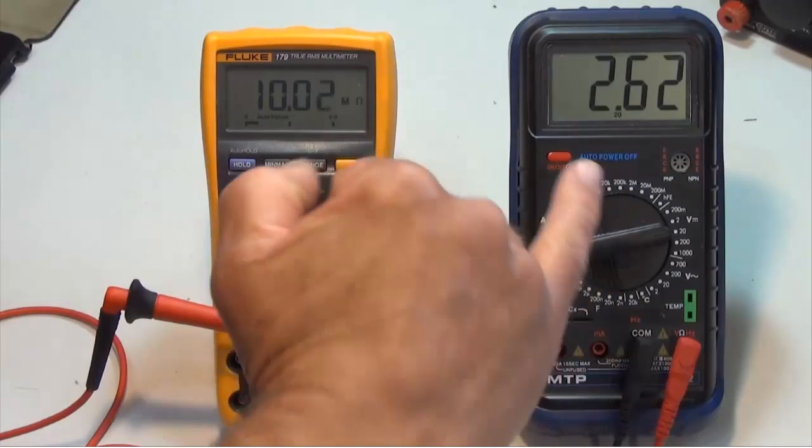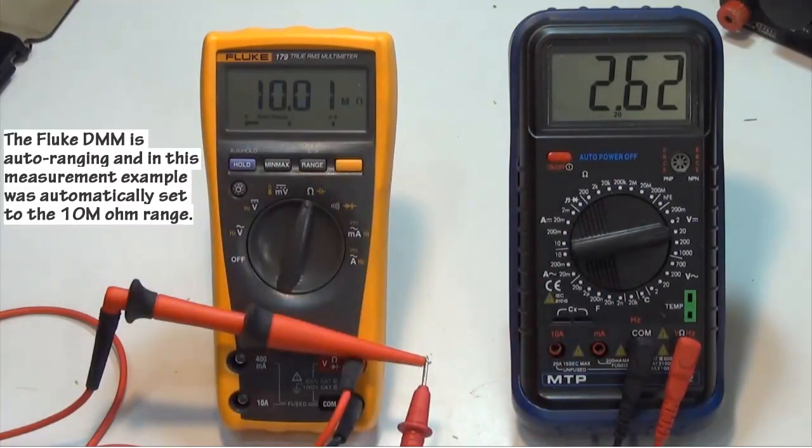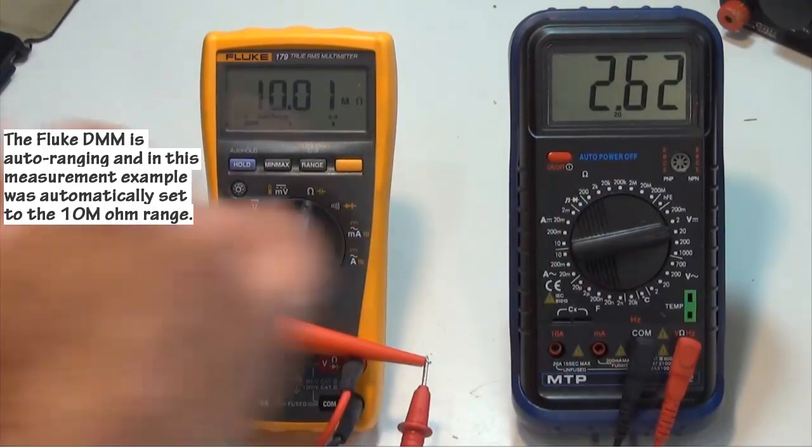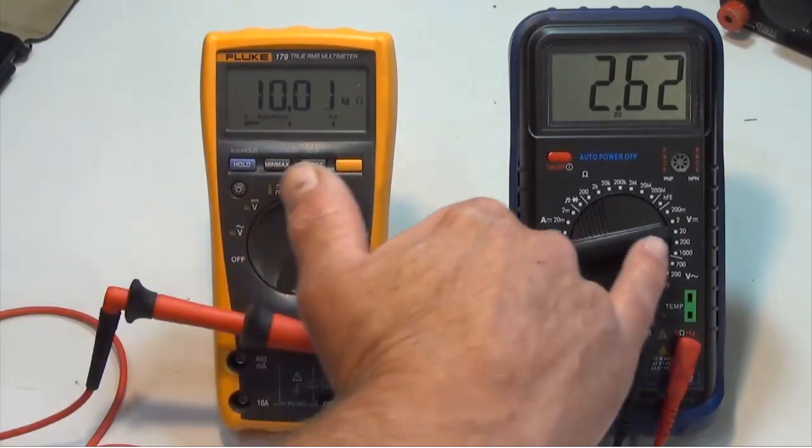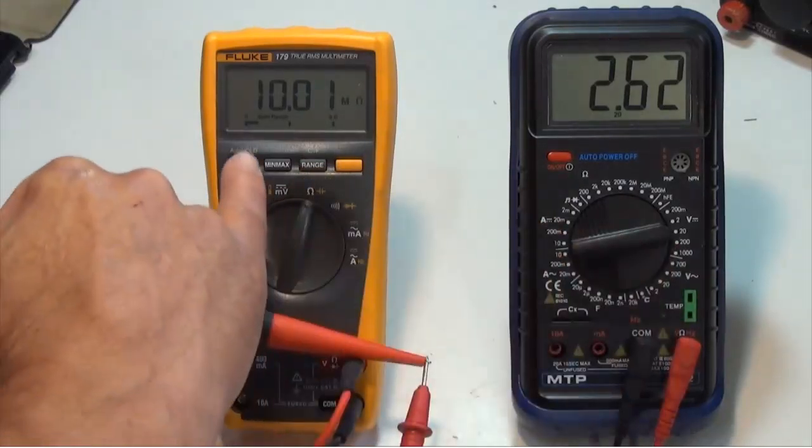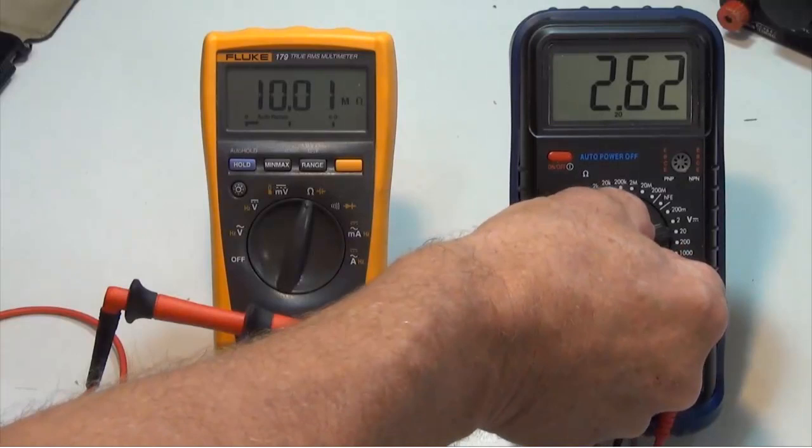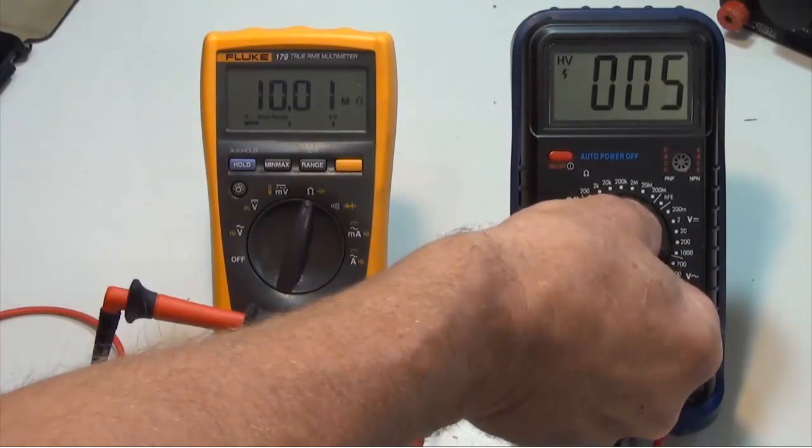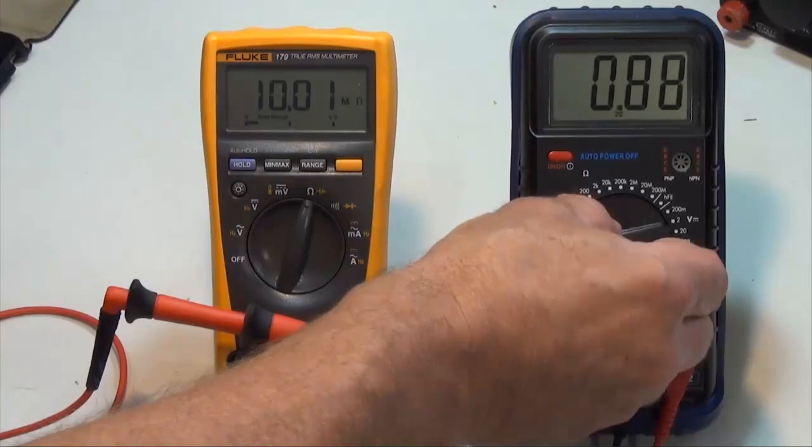You can see the Fluke meter is actually producing about 2.62 volts DC. The Fluke meter is actually measuring on the 20 volt range about 10 mega ohms. Let's see if it changes. That's staying pretty constant.